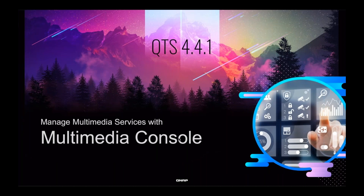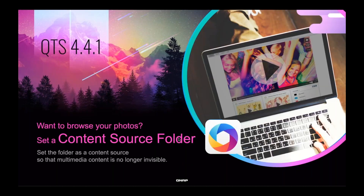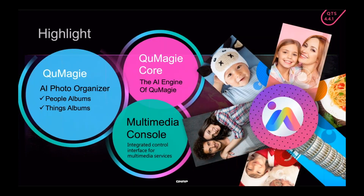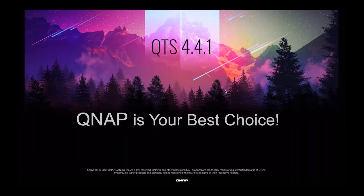The last thing to talk about is Multimedia Console, which allows you to manage all your source folders for your different multimedia apps — for example, choosing certain folders as a source for Photo Station, different folders for Video Station, and different folders for QMagic. To summarize: QMagic can recognize people, things, places, and themes; QMagicore is the AI engine for QMagic; and Multimedia Console allows you to manage your multimedia content across your different multimedia apps. That's what I wanted to cover today about QTS 4.4.1 — there's a lot that's new. Thank you for watching.